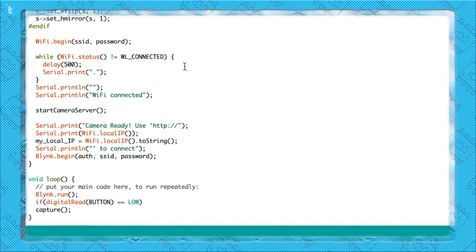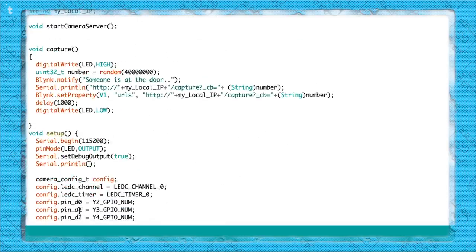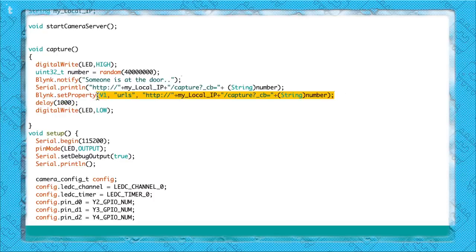Inside the loop I'm just polling the button pin, and as soon as the button pin goes low I'm calling a function called capture. Inside the capture function I'm turning on the LED first, then sending a notification to the smartphone, and then changing the property of variable V1 using the function Blynk.setProperty — changing the link every time the button is pressed. Thanks to the random function in Arduino, a different link is requested each time, so we get a new image every time the button is pressed.